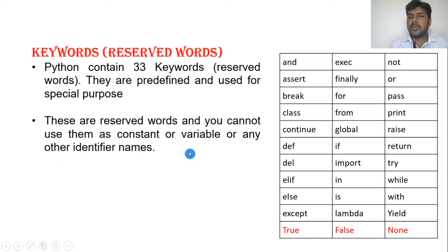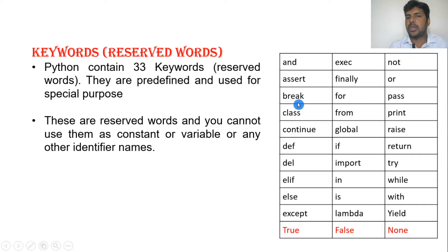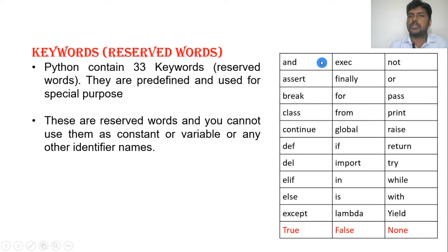For example, if I want to declare a variable like 'roll_number' I can do that. But I cannot declare a keyword as a variable name. For example, I cannot declare 'and' or 'break' as a variable name. Similarly, you cannot use these keywords as function names or identifier names.